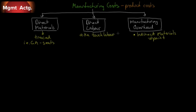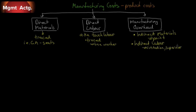Direct labor, also known as touch labor, is also traceable — you can trace the cost to the product. A line worker who is touching the material as it goes by is a direct labor cost. We also have indirect labor: people who work in the factory but do not touch the product. A good example is the custodian — it's necessary to clean the factory, but because they don't touch the product, they're not considered direct labor. Similarly, a supervisor may oversee many different lines of production and you can't trace their salary to just one item.